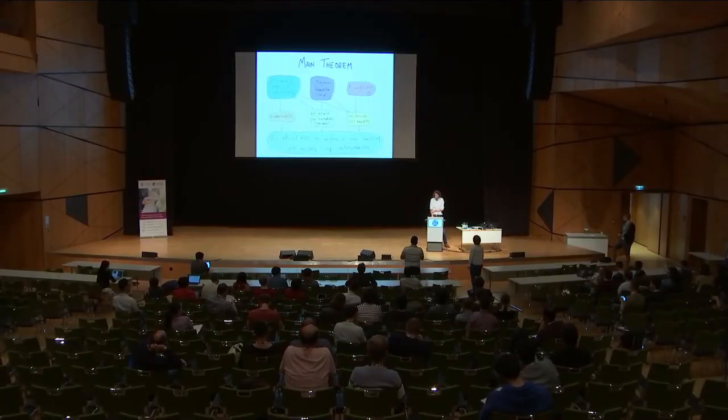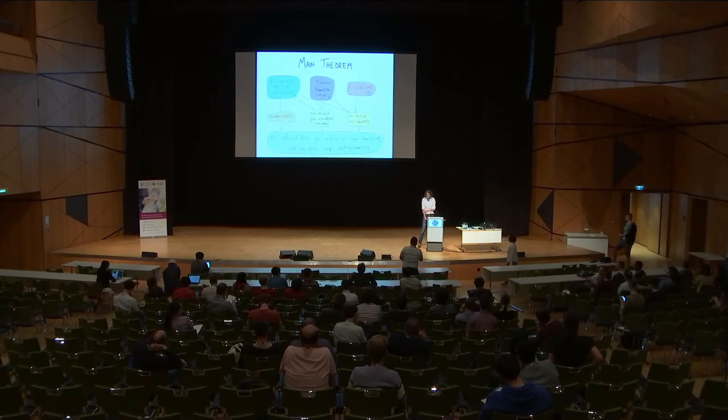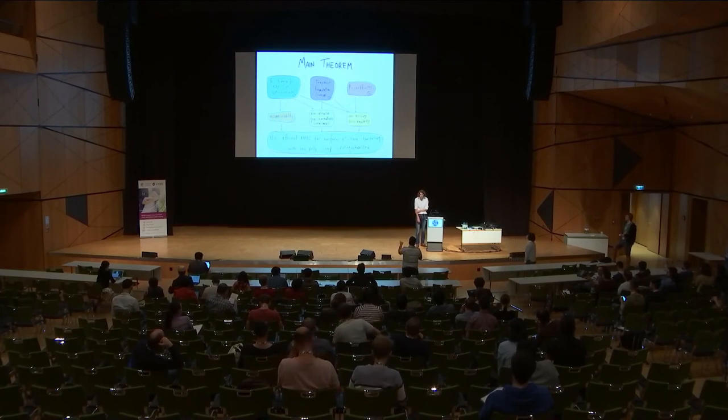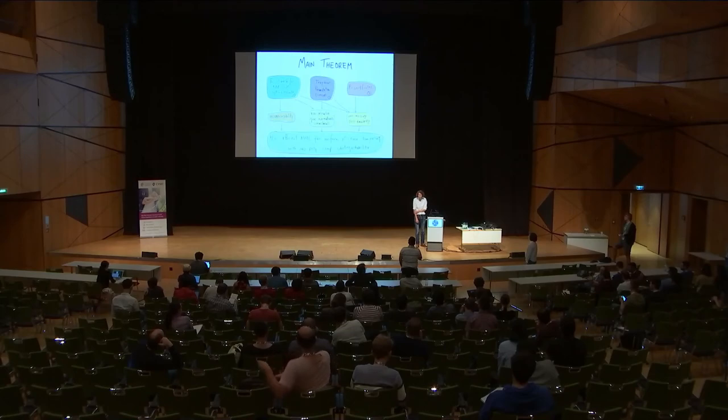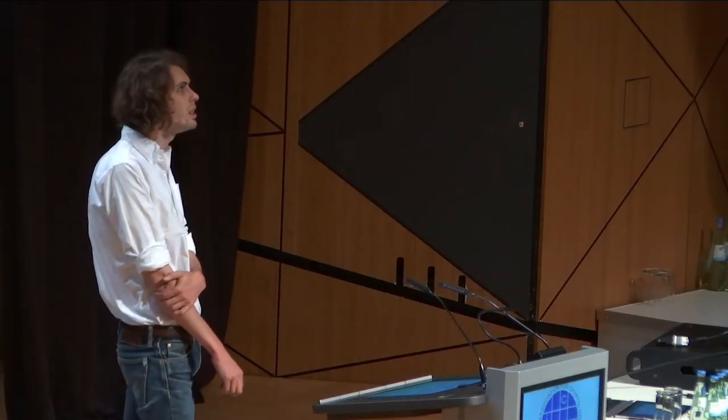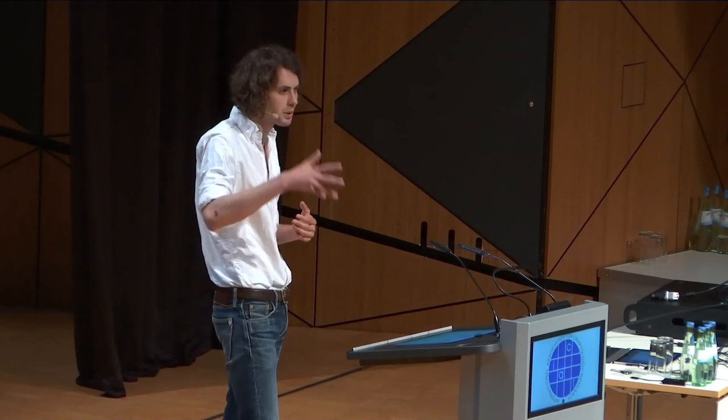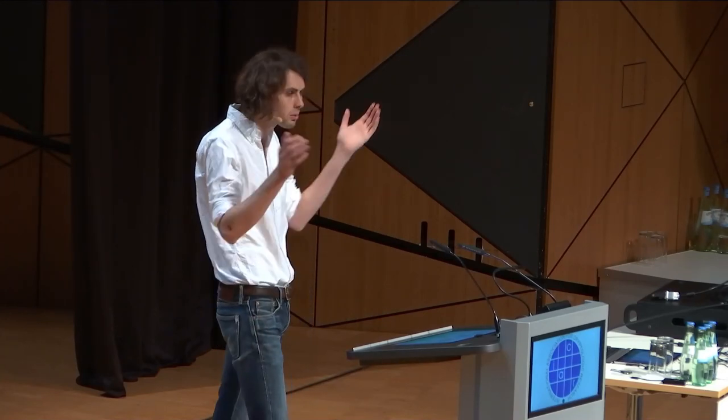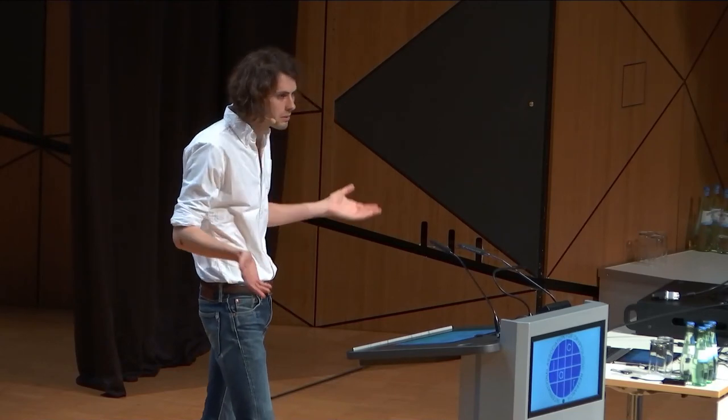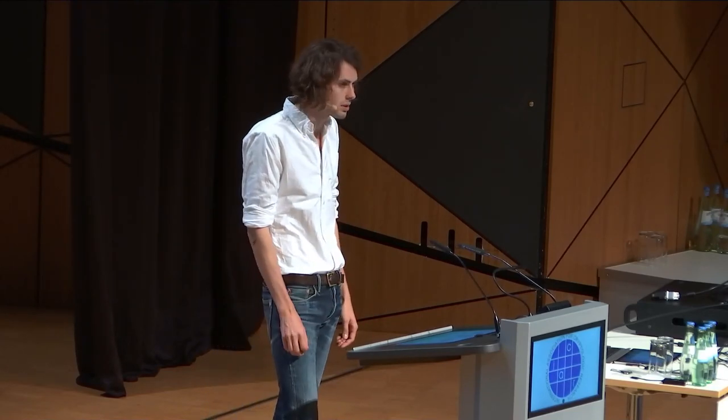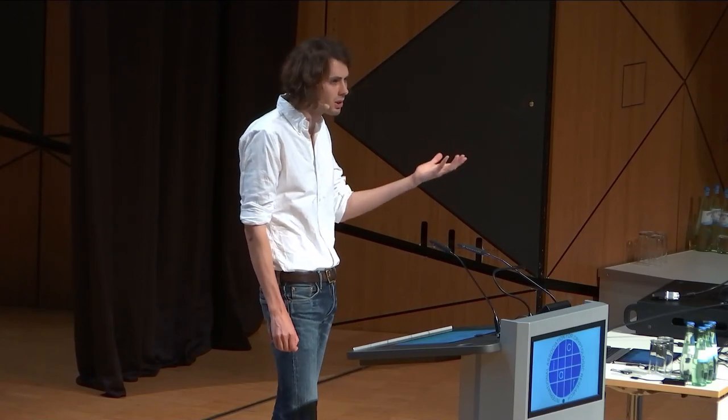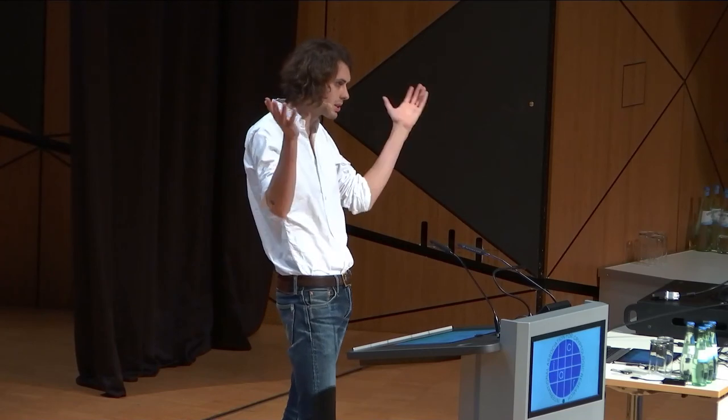Cheraghchi and Guruswami, you mentioned had a result that did not use CRS and had a non-malleable code in the same model. Yeah, but again, it's not so different because it's not a fully explicit construction. All they show is the sort of Monte Carlo style procedure that with high probability outputs a good code. But you can't really put your finger on which one is, whether code is good or not. So with overwhelming probability, it's good, but it's still not, you still don't know. And you can view the CRS as sort of, it's a similar setting. You fix a CRS, it will be a good code.